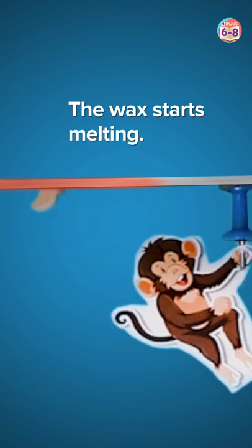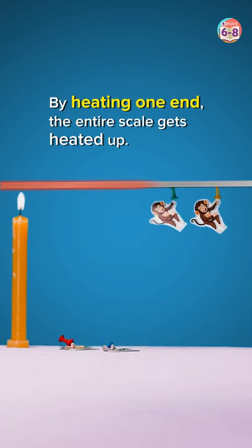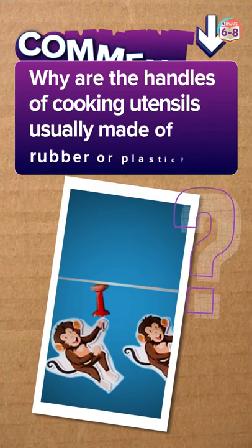Because of this heat, the wax starts melting. Hence, when you heat one end of the scale, the entire scale gets heated up and all the monkeys fall down.